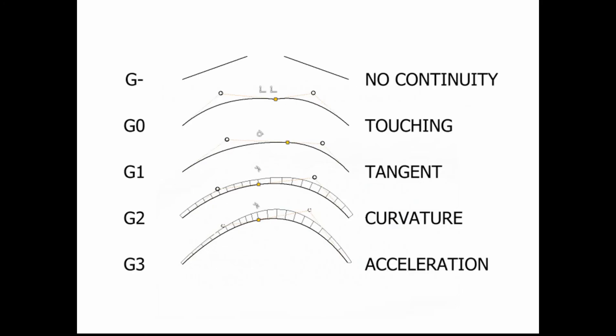As I mentioned before, G0 continuity, when you have splines, is when you have a co-point situation. If it's a surface, you've got a co-edge condition. G0 is when you have point continuity.